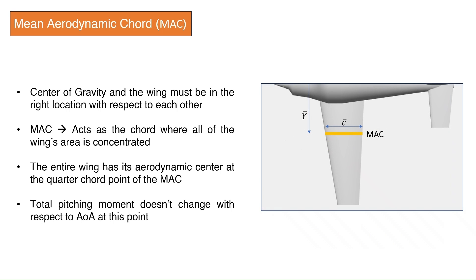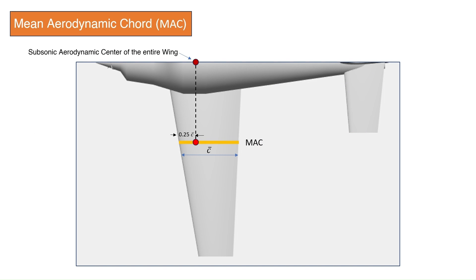The MAC is some chord C, at a distance Y from the centerline. It acts as if all the wing's area is concentrated on that chord. The entire wing will have its aerodynamic center at the quarter-chord point of the MAC. The speciality about this point is that if the total pitching moment is measured from that location, it does not change when the angle of attack changes. There are two ways in which the MAC can be found. This formula can be used to find the MAC chord length. The second way is a graphical method.